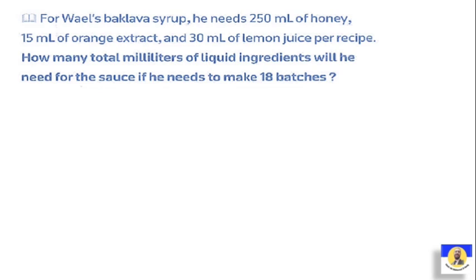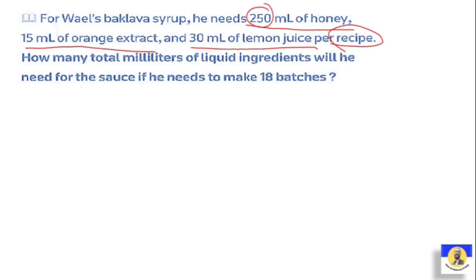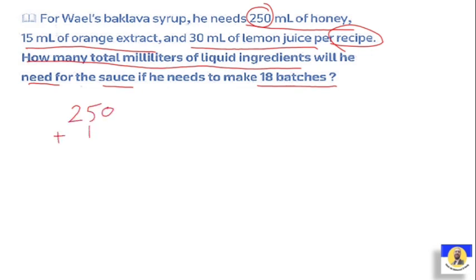Next question: For Wail's baklava syrup, he needs 250 milliliters of honey, 15 milliliters of orange extract, and 30 milliliters of lemon juice. That's all the ingredients for one batch. So how many total milliliters of liquid ingredients will he need for the syrup if he needs to make 18 batches? First, we add all the ingredients together: 250 plus 15 plus 30, which gives us the total for one batch.